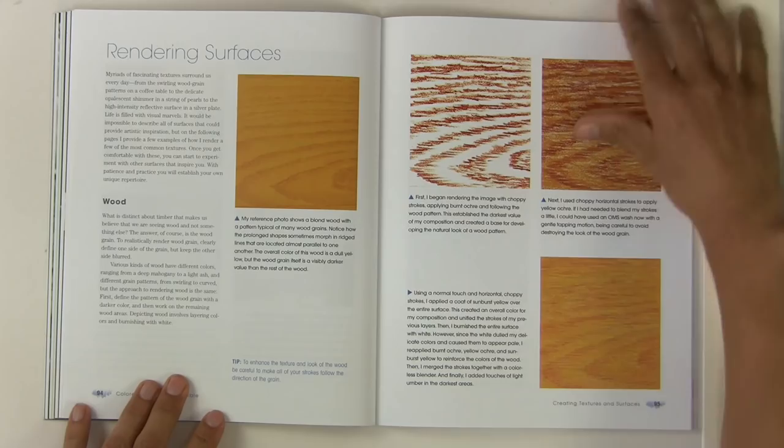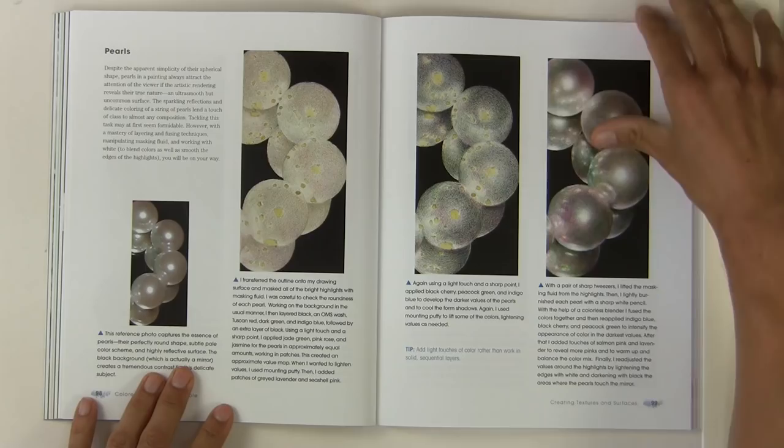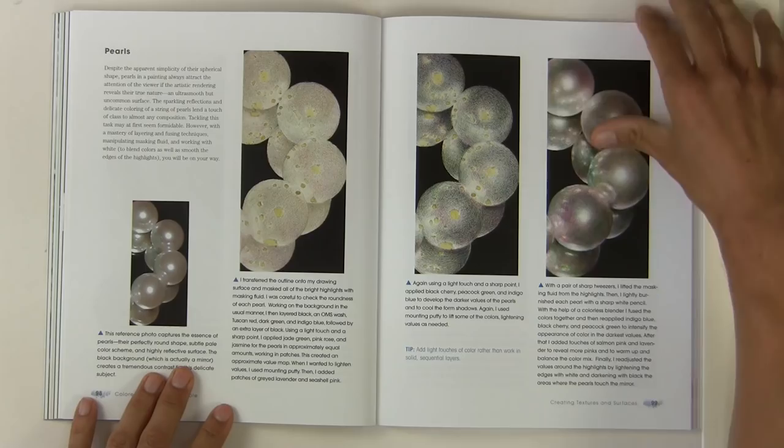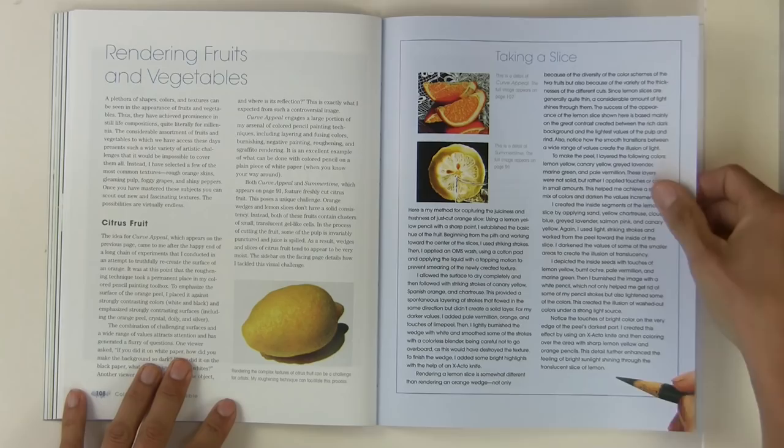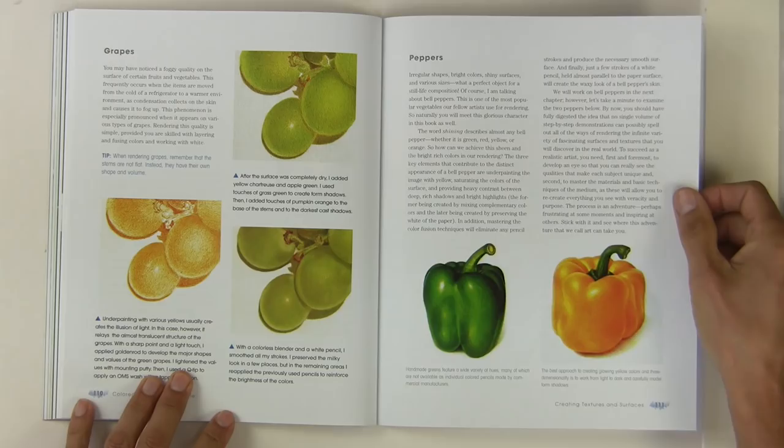And it really does show how to create very realistic effects. And even rendering fire, surfaces such as wood grain and texture, silver, pearls. On some of these, I would have liked to have seen some more explanation and some more step-by-steps, but obviously with a book, you're really limited. There's not an unlimited number of pages when you're doing a book, so you've got to try and be as concise as possible.